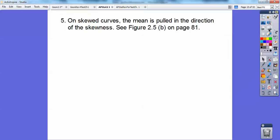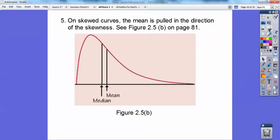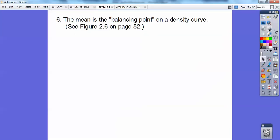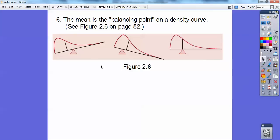So on skewed curves, the mean is always pulled in the direction of the skewness. We talked about that before. So here's one skewed to the right, so the mean is still going to be to the right of the median right there.